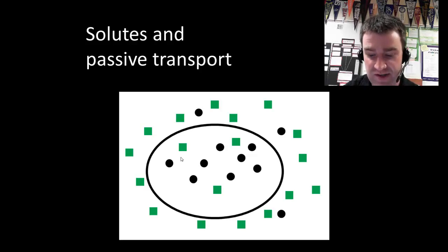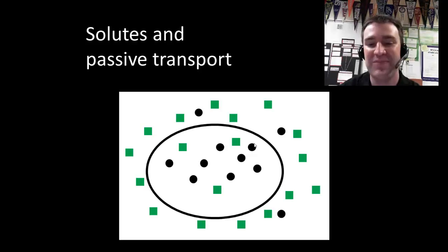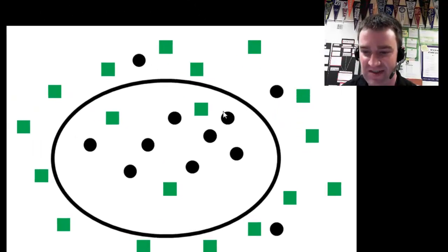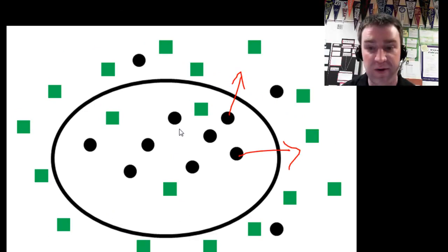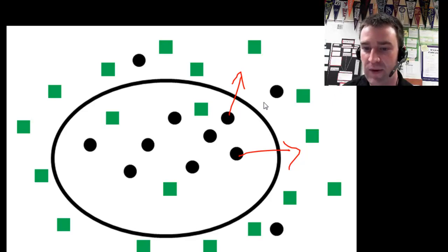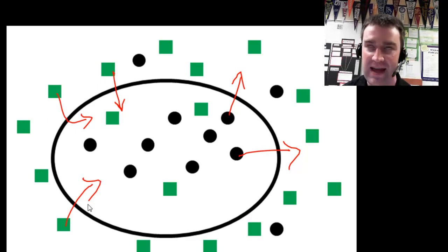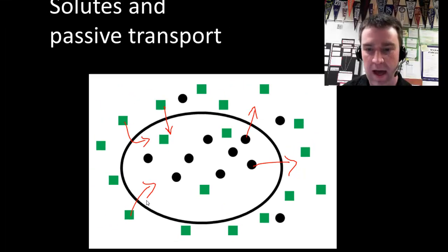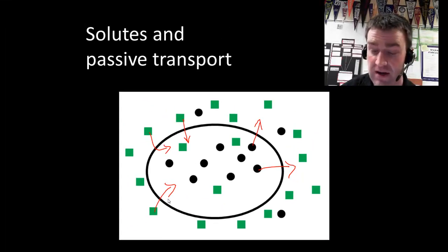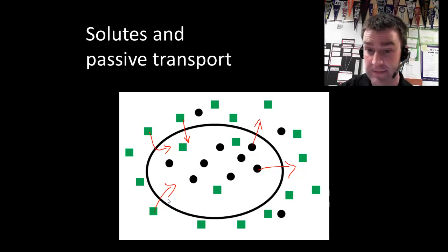The passive transport of a solute does not depend upon the concentration of other solutes. Black particles that are highly concentrated inside the cell will, if they can cross the membrane, go from high to low concentration irrespective of the concentration of green particles. Likewise, green particles would net move based on their own concentration. Note: if a particle can't cross the membrane, it will not diffuse — the membrane is selecting what goes in and out.